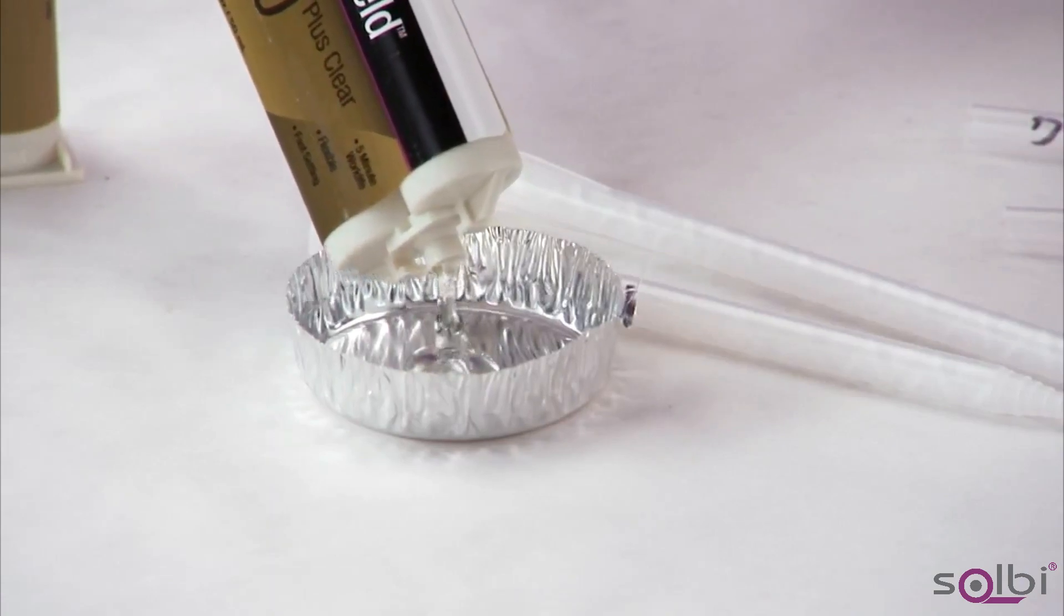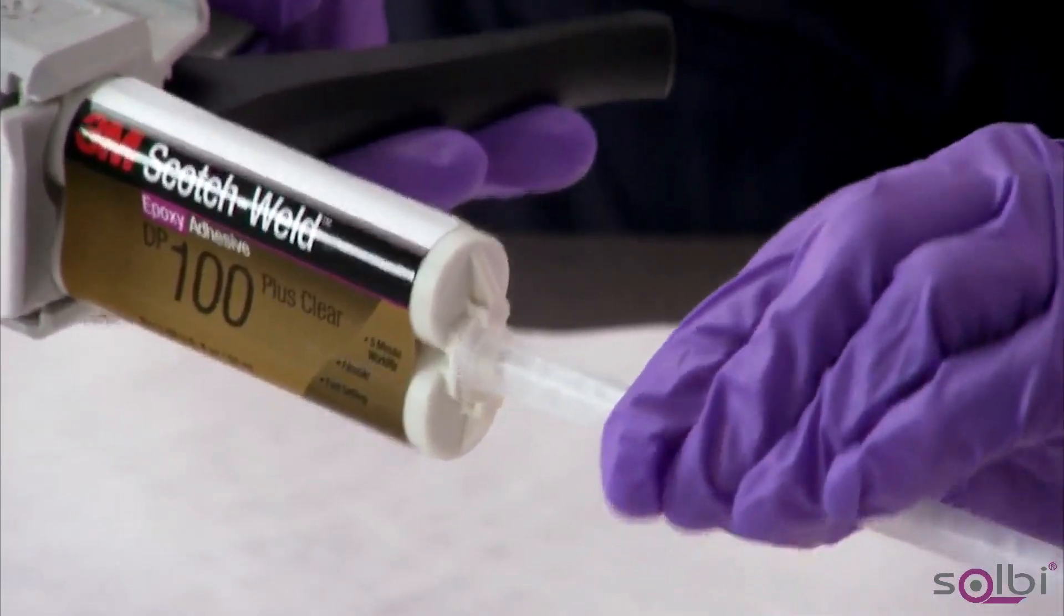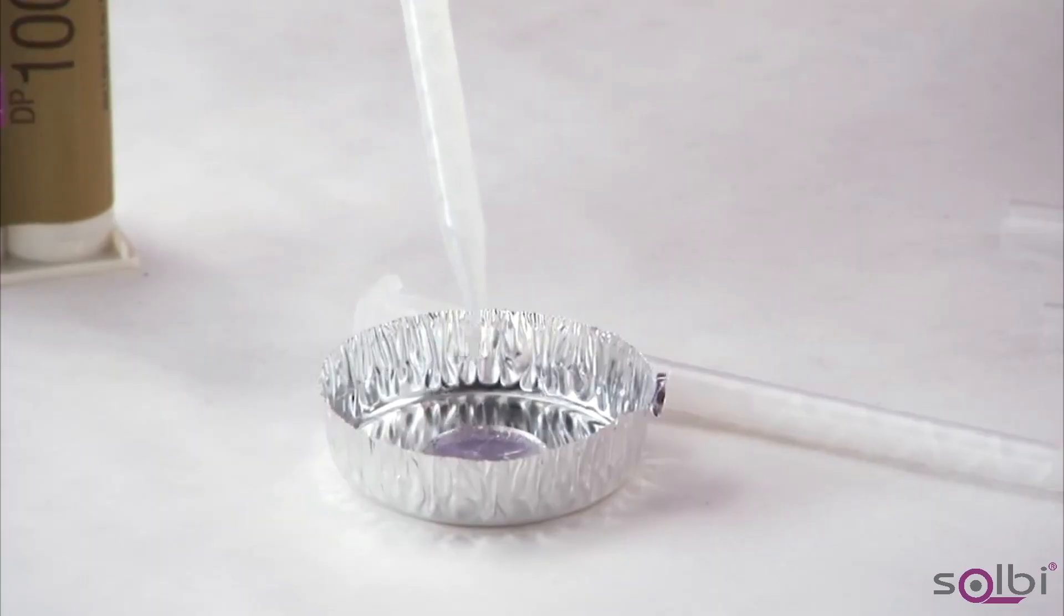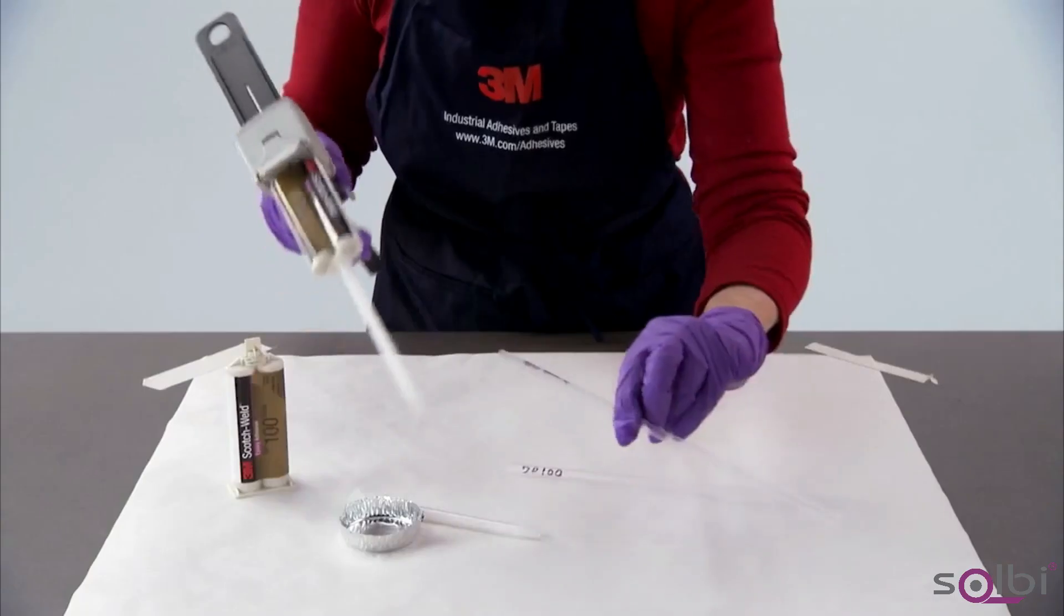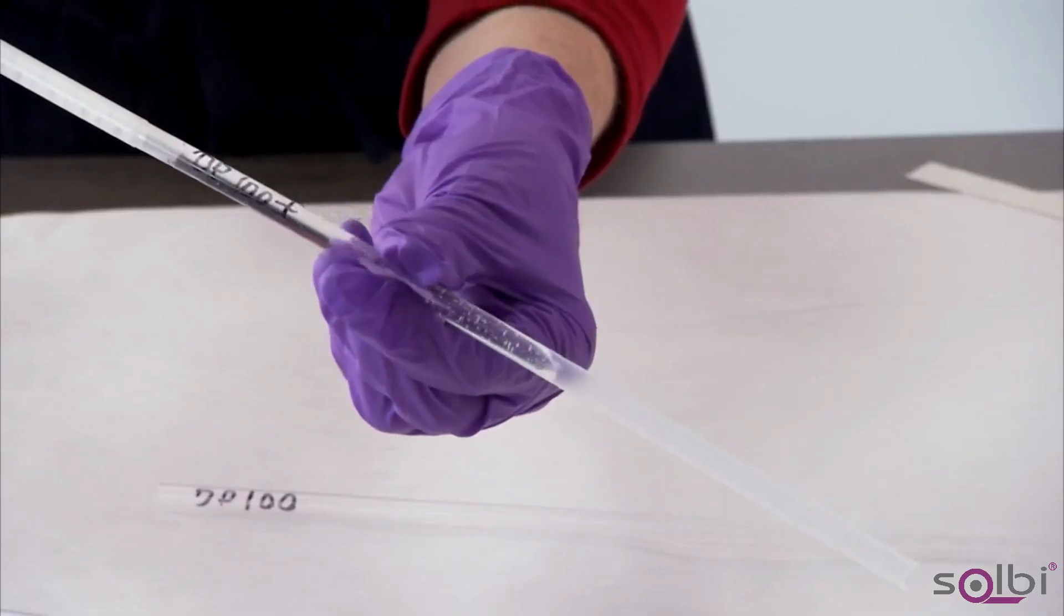Dispense a small dab to make sure both cartridges are flowing. Attach the helical tip and purge the adhesive through the tip. Now simply insert the tip into the straw and fill the tube. That's all there is to it.